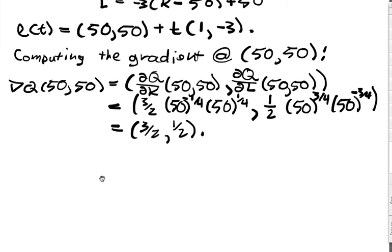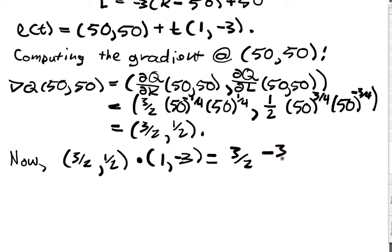So let's look at this. An interesting observation is that if we take 3 halves, 1 half, which is that gradient, and we dot it with 1, negative 3, which is the tangent direction, we get 3 halves minus 3 halves, which is equal to 0. That is, we had our gradient is perpendicular to the tangent.